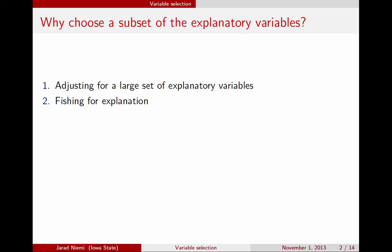The book Statistical Sleuth refers to this as fishing for explanation. You may also be interested in purely a prediction problem — finding the model, given all these explanatory variables, that best predicts the data you have or, perhaps more importantly, best fits new data you could obtain. If you include all the explanatory variables, the predictions from that model are often very poor.